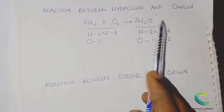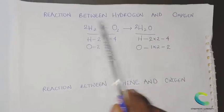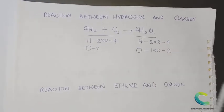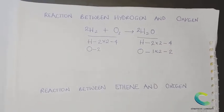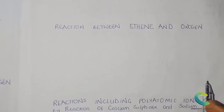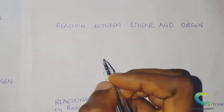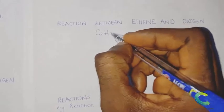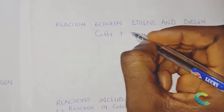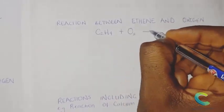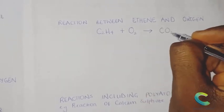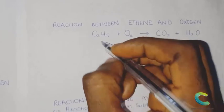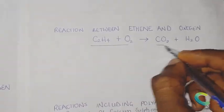Balancing equations means manipulating the coefficients to get the number of atoms on both sides equal. The next example is the combustion reaction of a hydrocarbon: C₂H₄ reacting with O₂ to produce CO₂ and water.